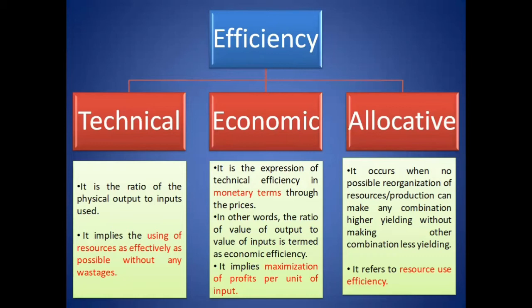Efficiency is of three types: technical efficiency, economic efficiency, and allocative efficiency. Technical efficiency is the ratio of physical output to physical input — how much output you get per unit of input. It implies using resources as effectively as possible without any wastage. Technical efficiency = Output ÷ Input.